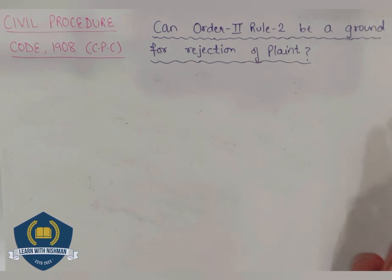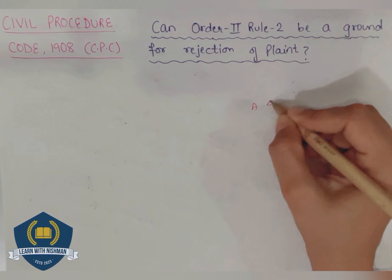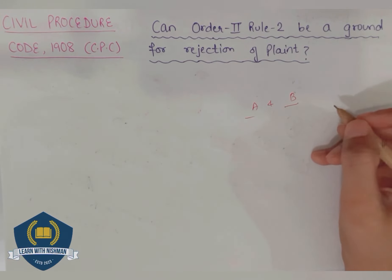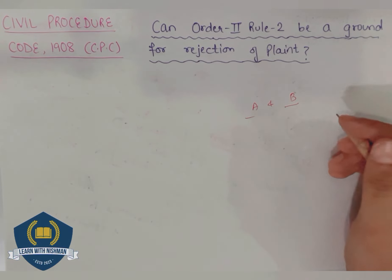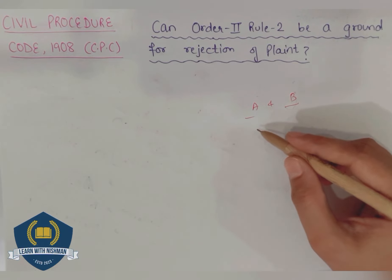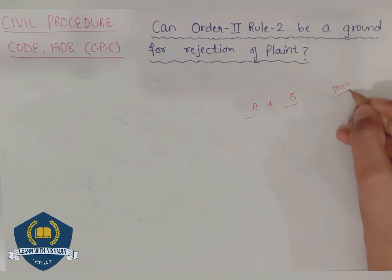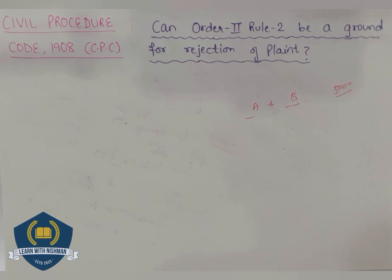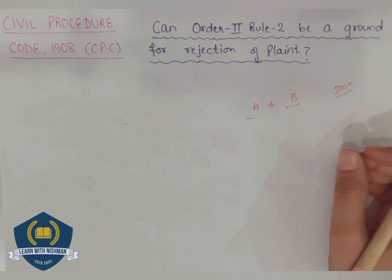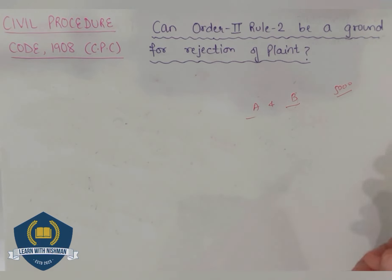Before discussing this, I will recap Order 2 Rule 2 so you have a summary. Suppose A took money from B at different intervals of time and different amounts. Now B wants to file a suit against A because A has not returned the money. But while filing the suit, he forgot or intentionally skipped to include an amount of Rs. 5000. So after the judgment of the suit, B again wants to file a suit for Rs. 5000. Order 2 says he cannot file it, as matters related to the same cause of action must be included in a single suit.